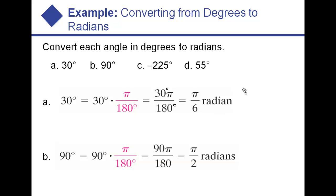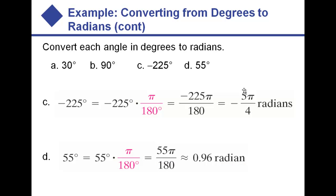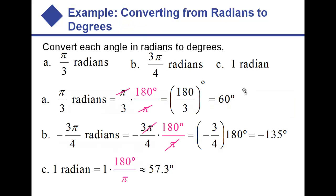Similarly with 90 degrees and negative 225 — we're just doing the same thing over and over, multiplying by pi over 180. If we want to go in the other direction, say pi over 3 radians to degrees, we multiply by 180 over pi instead. The pi's cancel, we're left with 180, and 180 divided by 3 is 60 degrees. The other conversions work the same way.